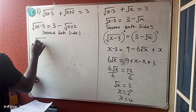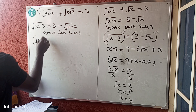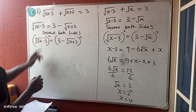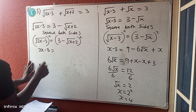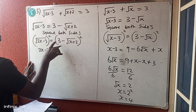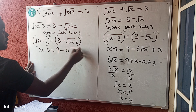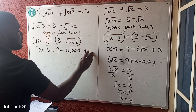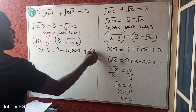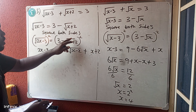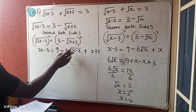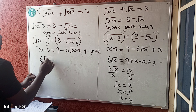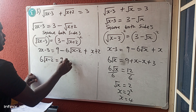Squaring both sides: root(2x - 3) squared equals (3 - root(x + 2)) squared. Left side becomes 2x - 3. Right side: square the first term gives 9, double the product of first and second gives -6·root(x + 2), and square the last term gives x + 2 (since minus squared is plus). Now move the square root to one side: 6·root(x + 2) = 9 + 2 + x - (terms from the left).